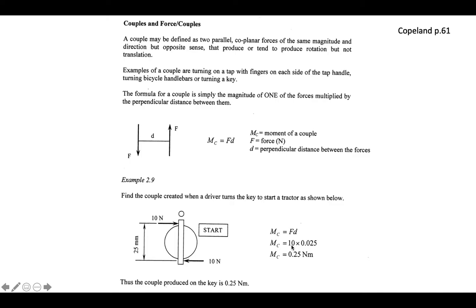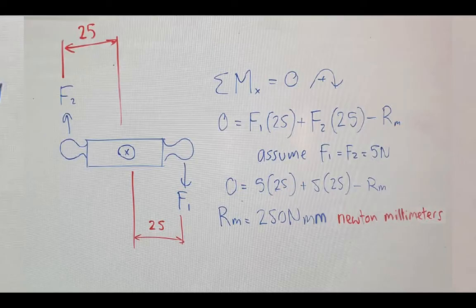The force is 10 Newtons multiplied by 0.025 metres, where Copeland has converted 25 millimetres into 0.025 metres. A lot of students leave out that leading zero so be really careful. I would personally give the answer as 250 Newton millimetres - 25 times 10 is 250 Newton millimetres. Let's have a look at how I might answer a question like this.